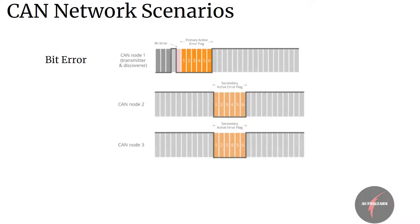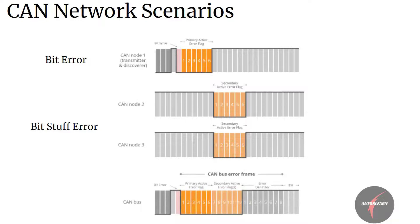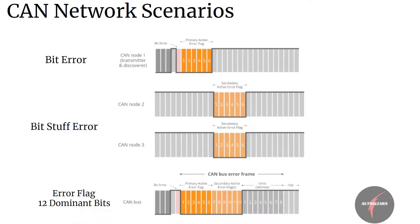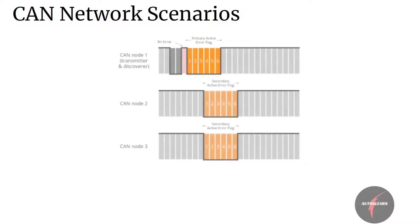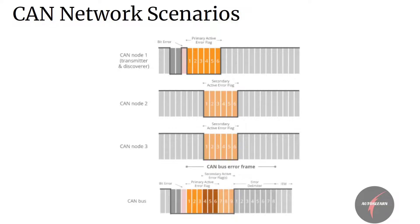In this case, all the other ECUs will only respond to the error flag after all 6 error flag bits from the transmitter ECU are transmitted on the network. All the other ECUs will consider it a bit stuff error upon observing the error flag and send their error flag simultaneously. Hence, first the transmitter ECU sends the error flag, and then after all 6 dominant bits are sent, the other ECUs send their error flag of dominant bits again — in total, the error flag will be 12 dominant bits followed by 8 error delimiter bits. There can also be a condition where ECUs identify the bit stuff error before all 6 dominant bits are sent, in which case the error flag will be less than 12 bits.